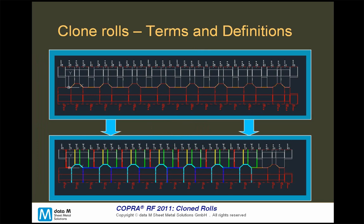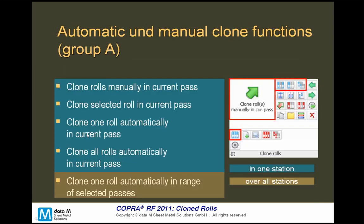Cloning rolls is especially helpful with trapezoidal or corrugated sections, where you usually have a huge number of identical rolls. Cloning rolls over a complete design allows you to figure out how many similar rolls of one type you are using within the tooling. In the picture above you can see the normal design, and in the lower picture you can see which identical rolls could be found when cloning.